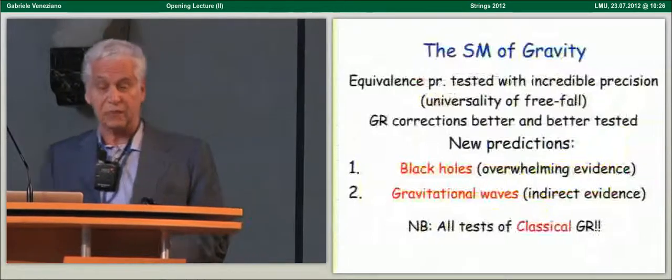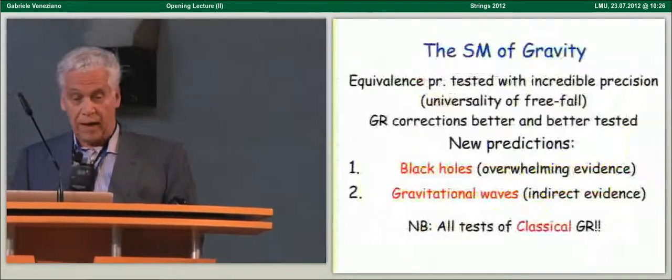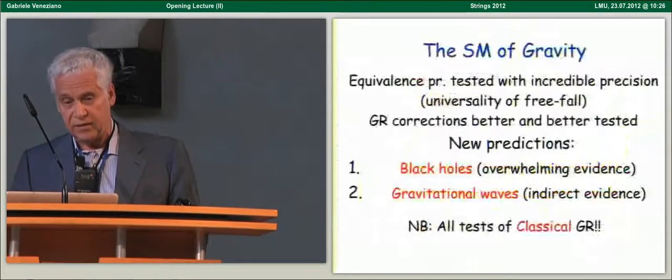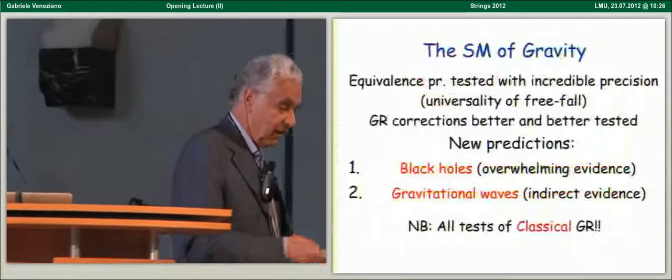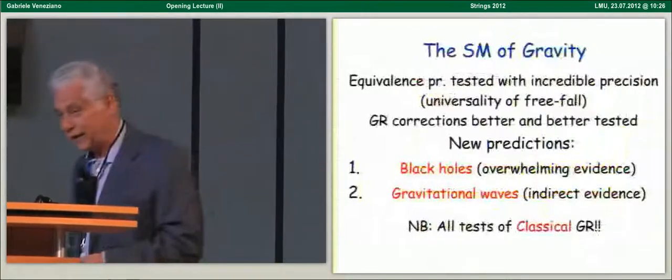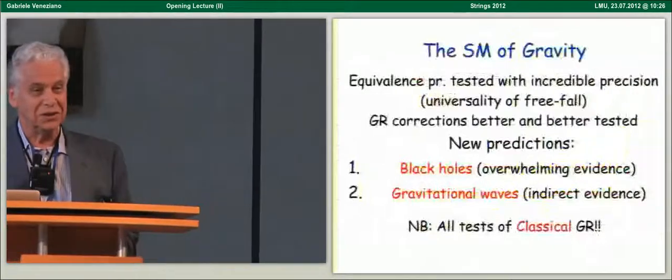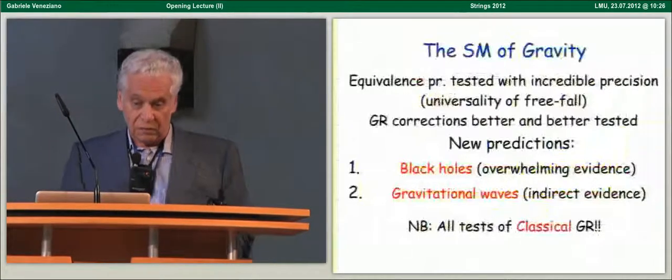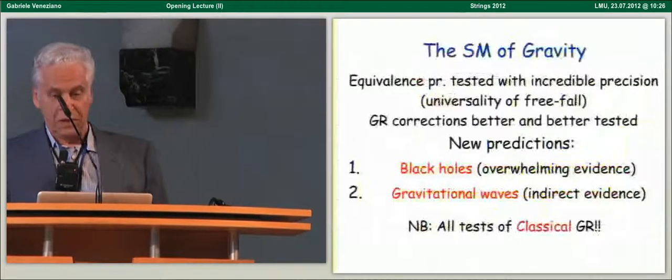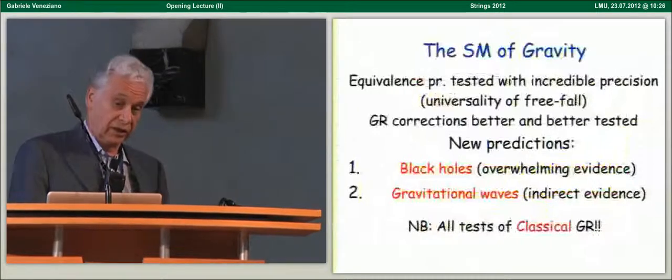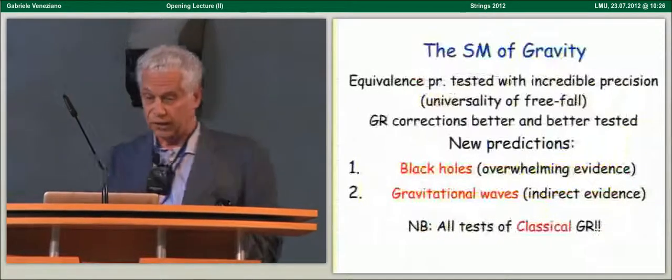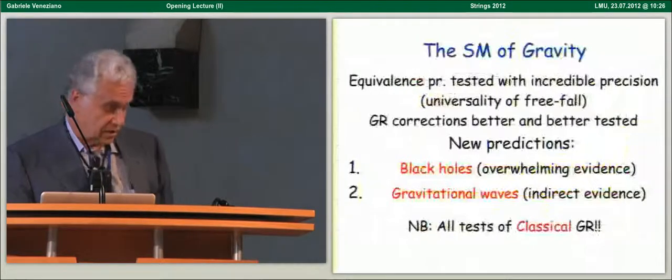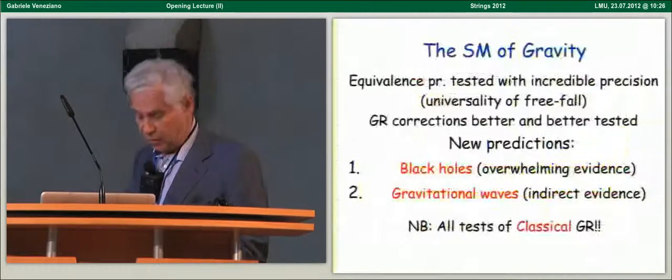Now, on the other hand, we have also a standard model of gravity, and we have formidable tests. The universality of free-fall, for instance, is the gravitational analog of g minus 2. It has been tested to incredibly high precision. There are also one per mil or better tests of general relativity corrections to Newtonian gravity. The new predictions of general relativity, like the existence of black holes, the existence of gravitational waves, have also been tested.